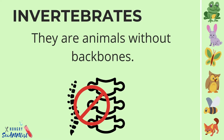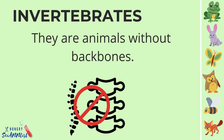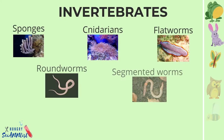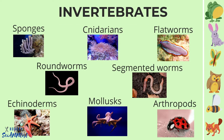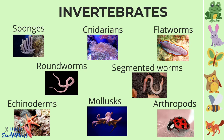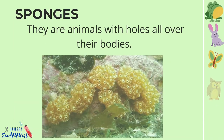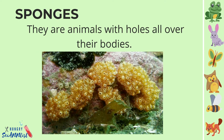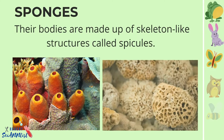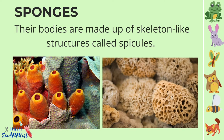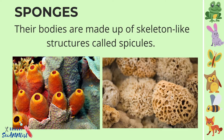Invertebrates are animals without backbones. Sponges are animals with holes all over their bodies. Their bodies are made up of skeleton-like structures called spicules.